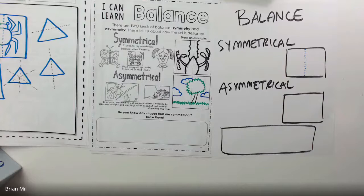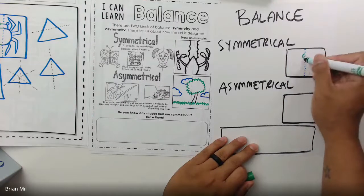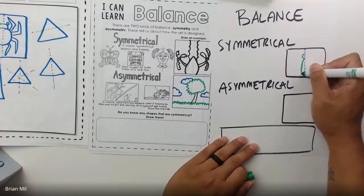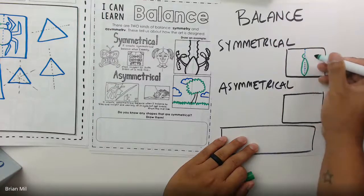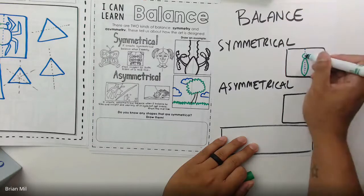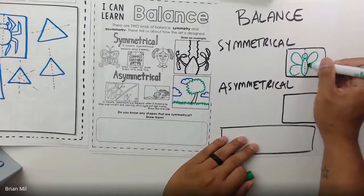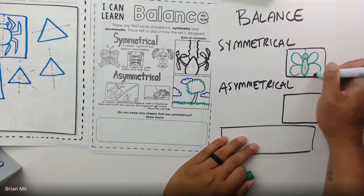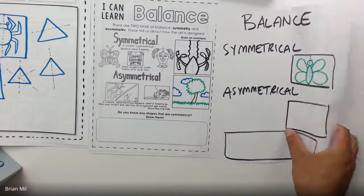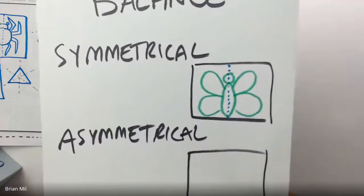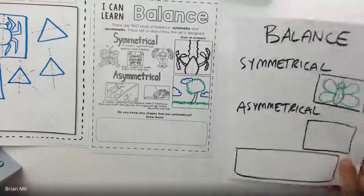I'm going to do my own example — maybe something simple, like a butterfly. So half a circle for the head and then a long oval for the body. I'll copy both of those shapes on the other side and add wings on this side and wings on that side, making sure it's symmetrical. If you want to go more advanced you can. That is a great example of symmetry.